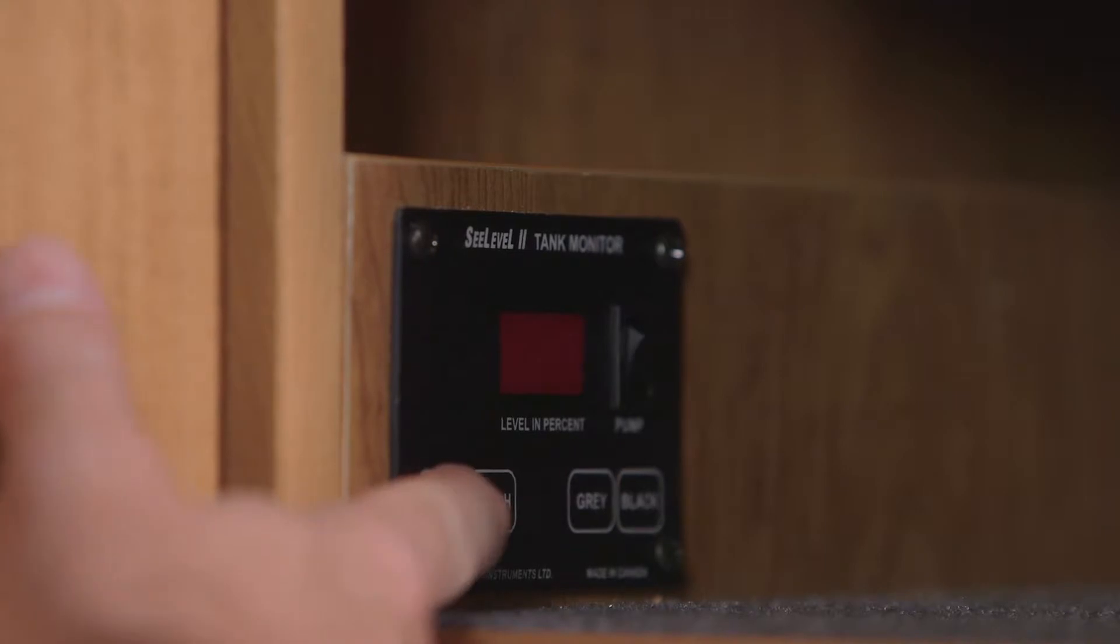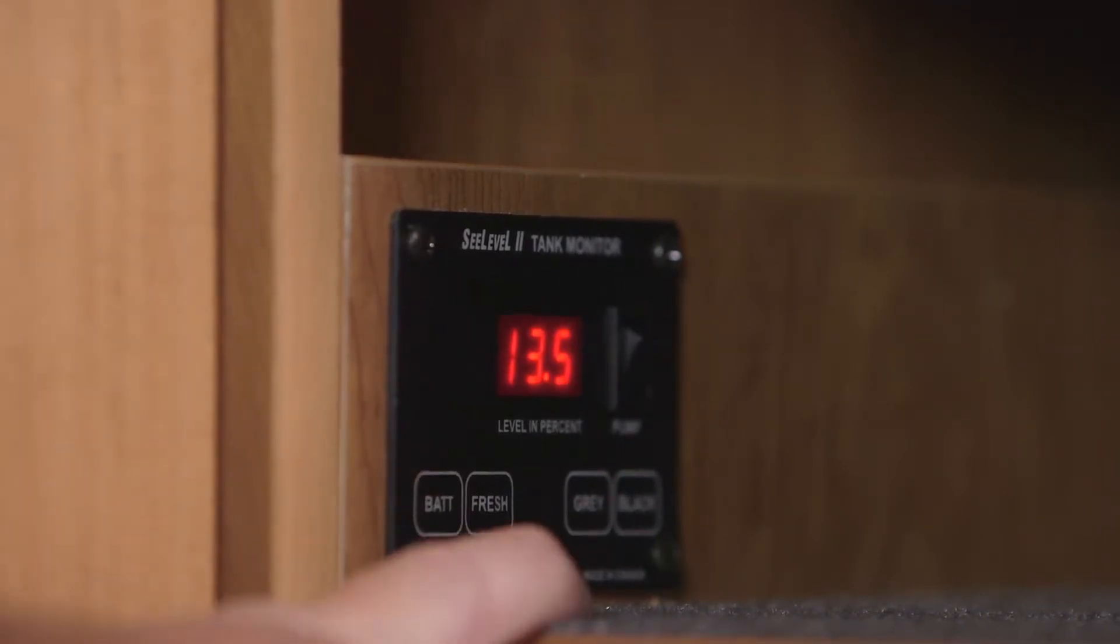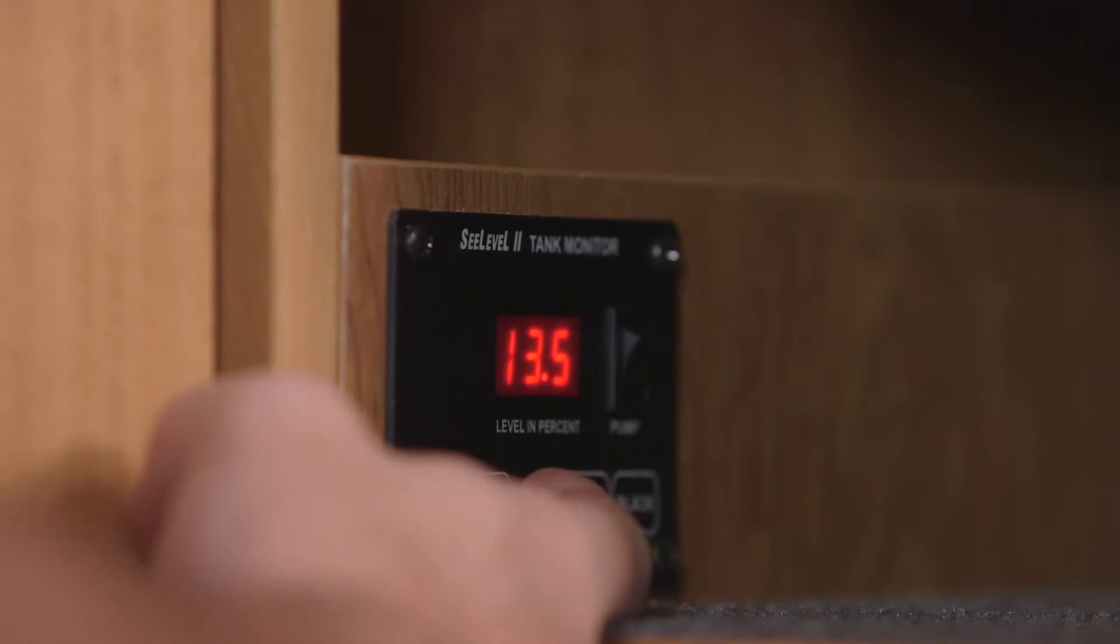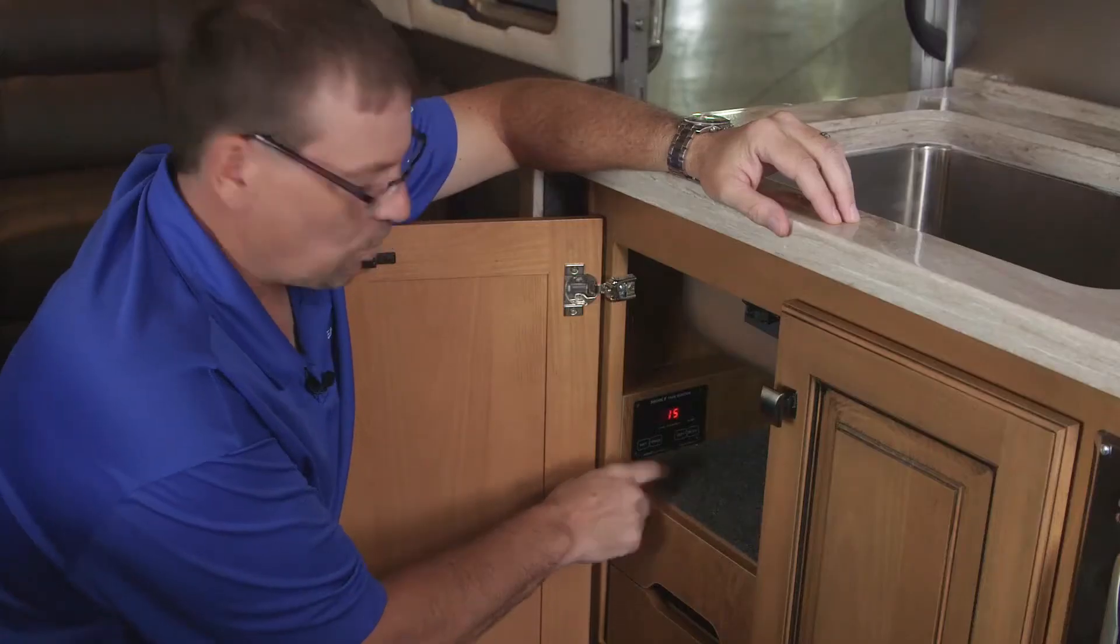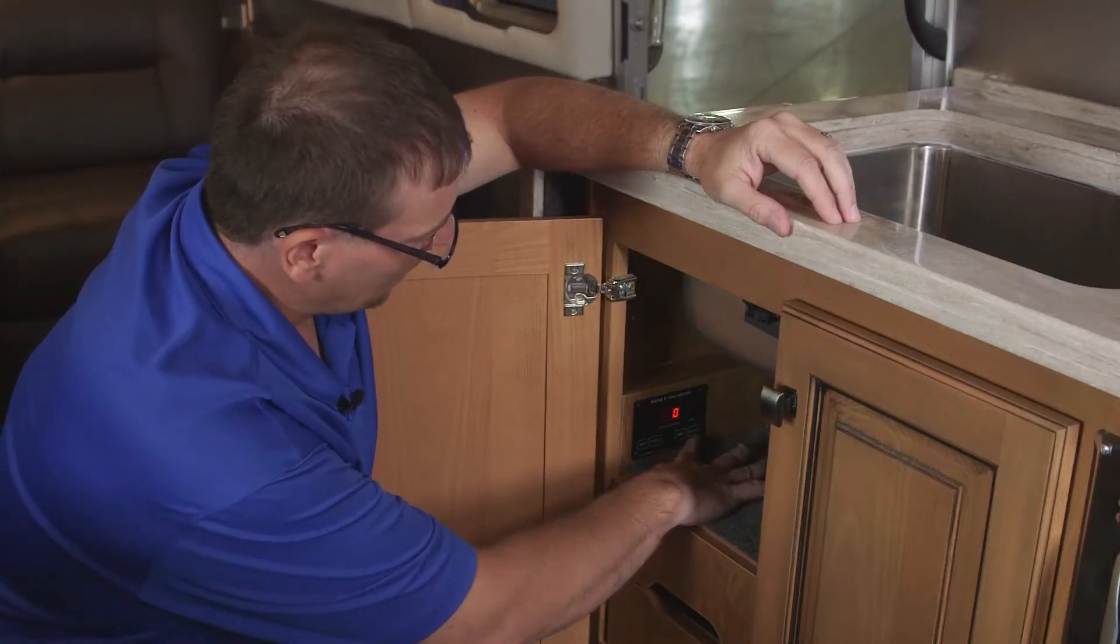If I hit that, that's going to tell me how many volts are in the system, which is 13.5. The next button is the fresh water tank, and we got 15% fresh water. Next we have the gray tank which is at 38%, then we have the black tank which is at zero.